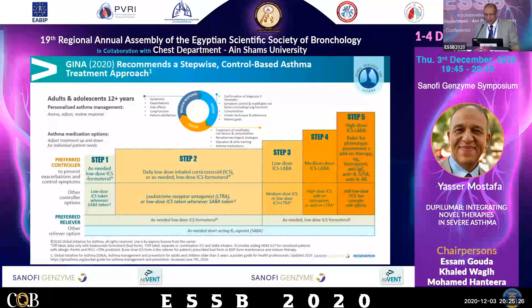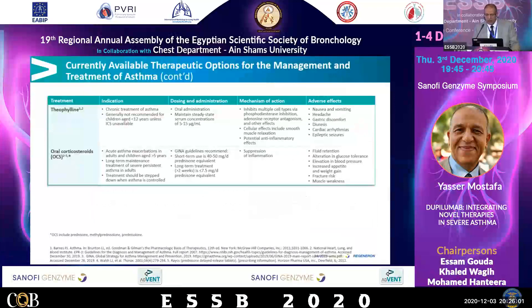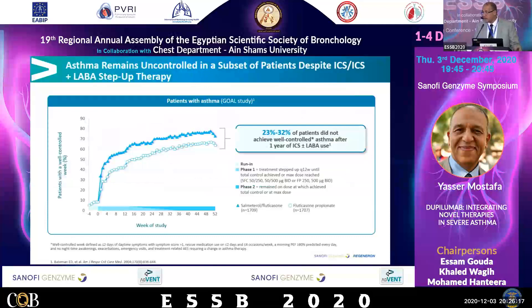For 2020, I recommend a step-wise controlled-based asthma treatment approach. Still we have step 5, which is the headache for everybody. The available tools are inhaled steroids, leukotriene-modifying agents, long-acting beta agonists, LAMA, theophylline, and oral corticosteroids — all effective in managing and controlling about 70 to 80% of our asthmatics. Still, 23 to 32% of patients, according to many studies done all over the world, are uncontrolled or did not achieve well-controlled asthma after one year of ICS use.